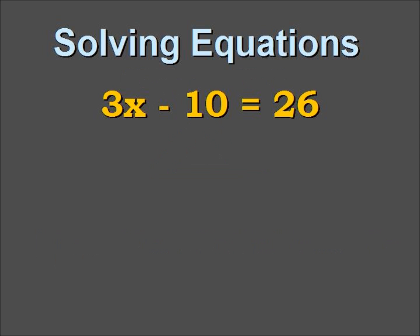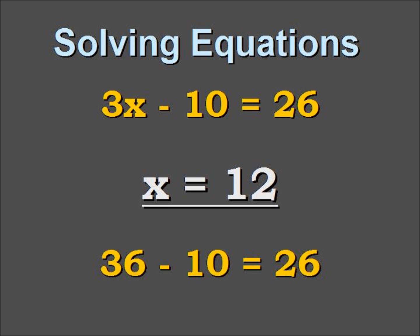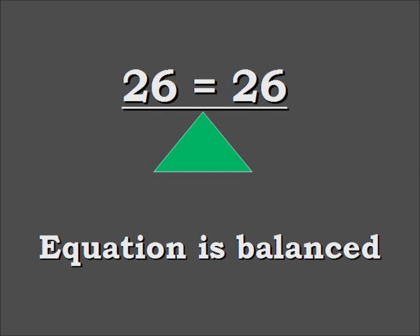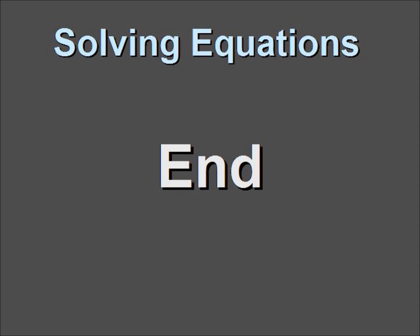One last time. We have our original problem and the solution x equals 12. We plug 12 back into the original equation. We get 36 minus 10 which equals 26. So 26 equals 26, a balanced equation. That means our solution is correct. And that's the end of the video. Thanks.